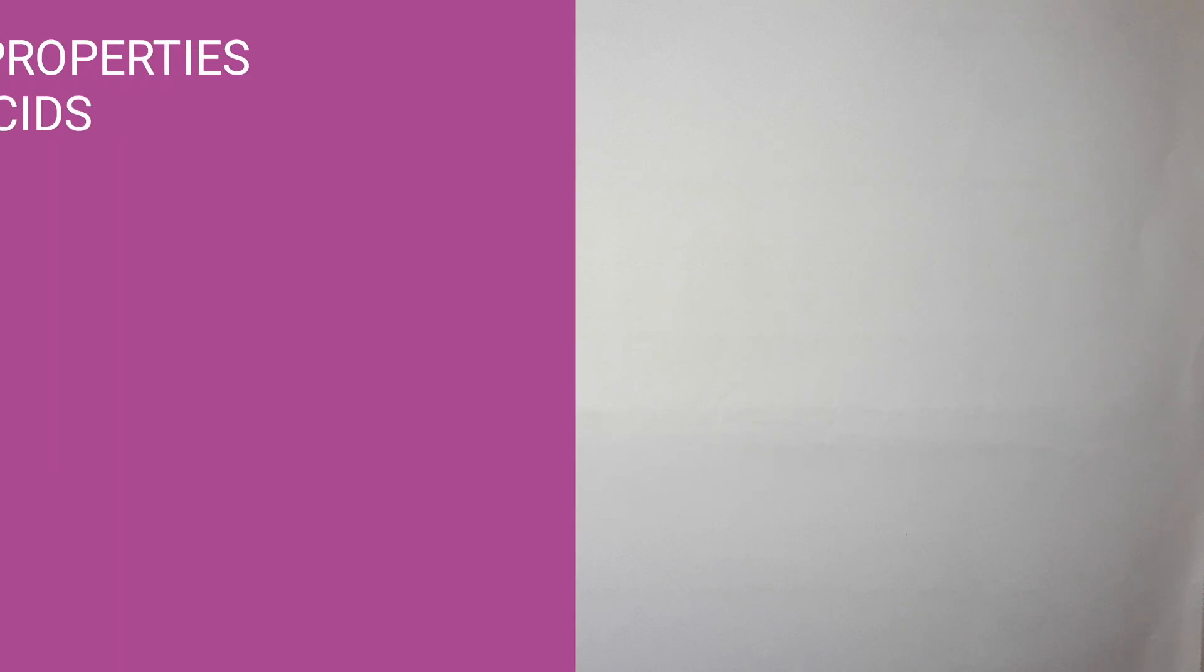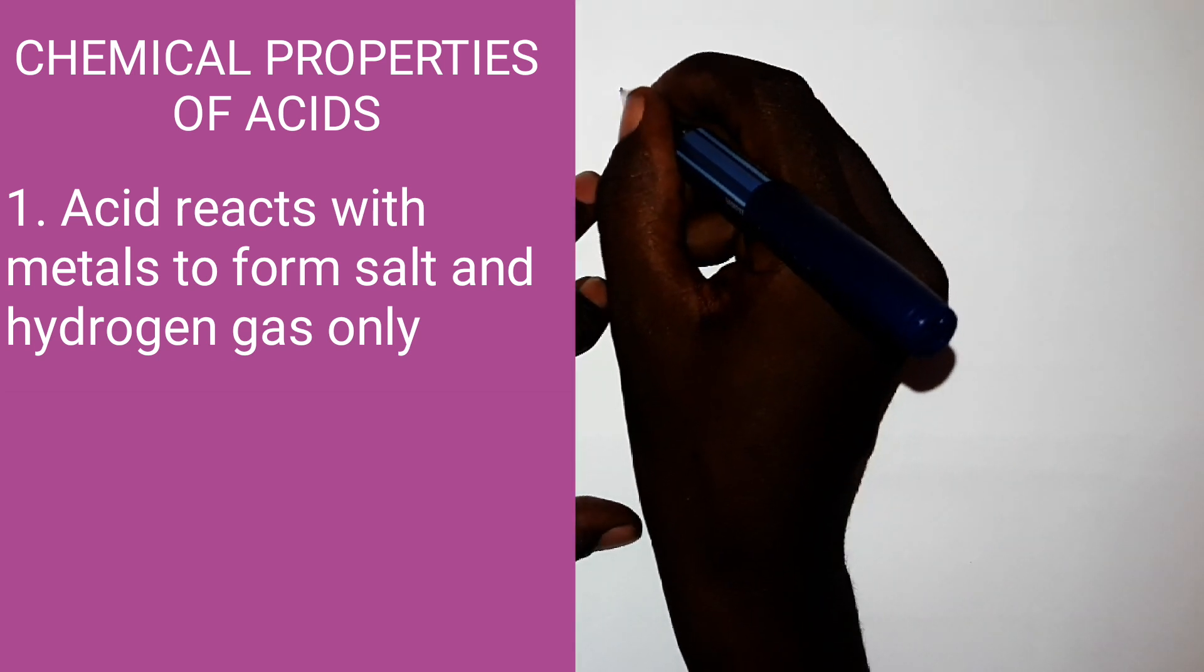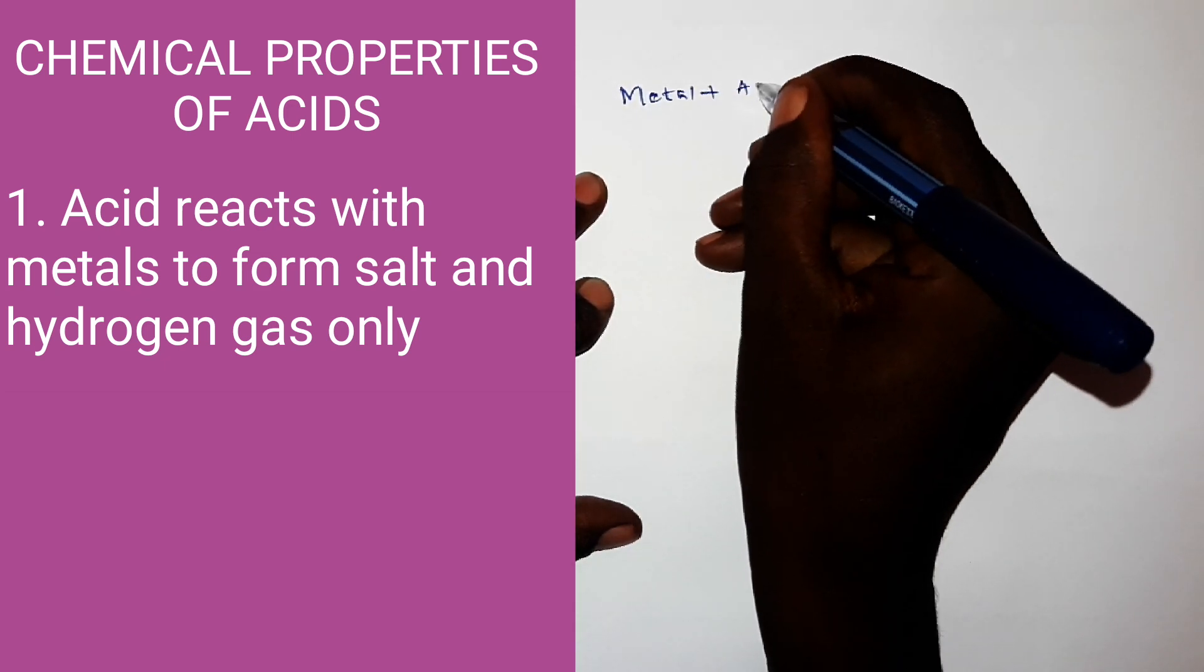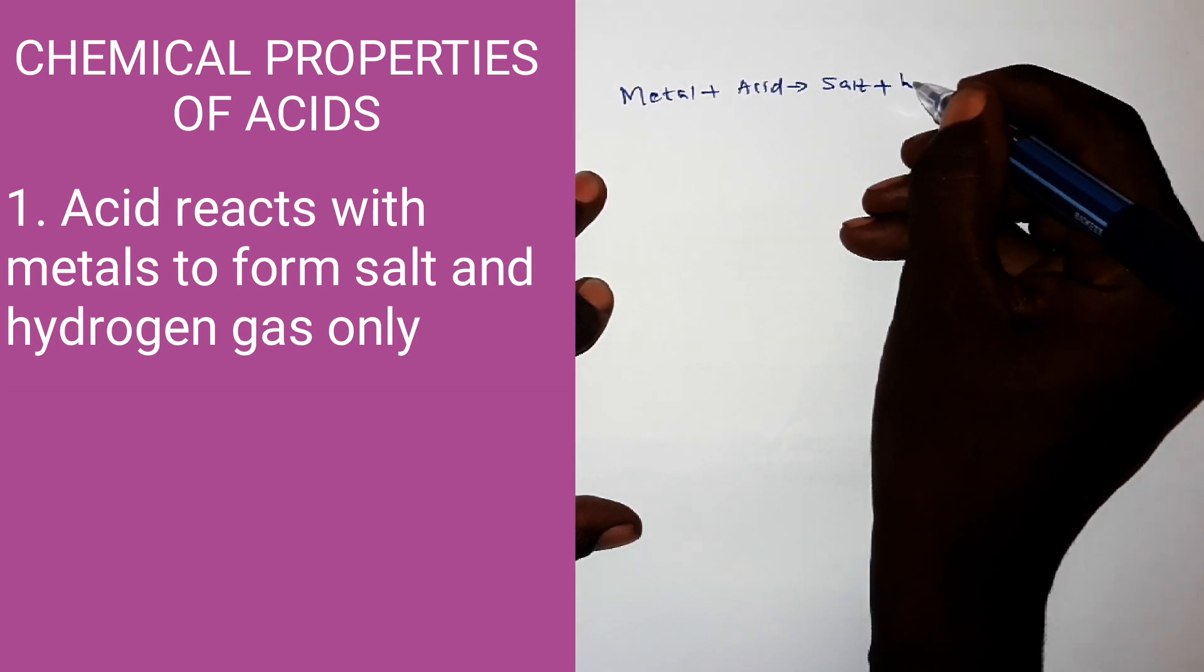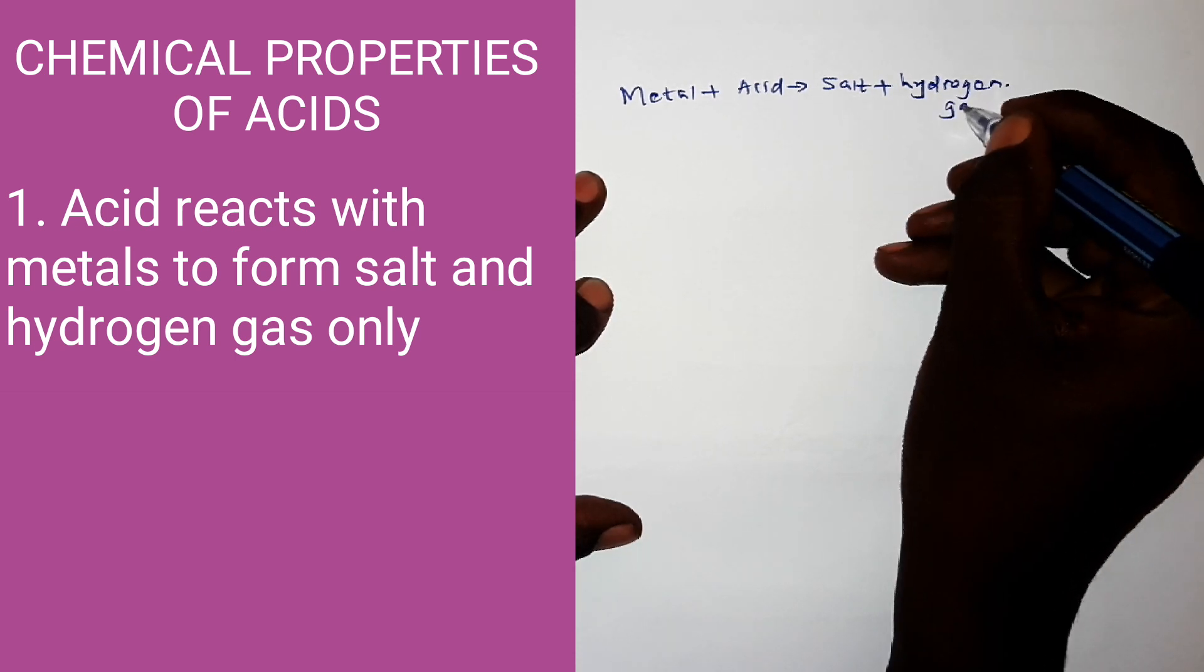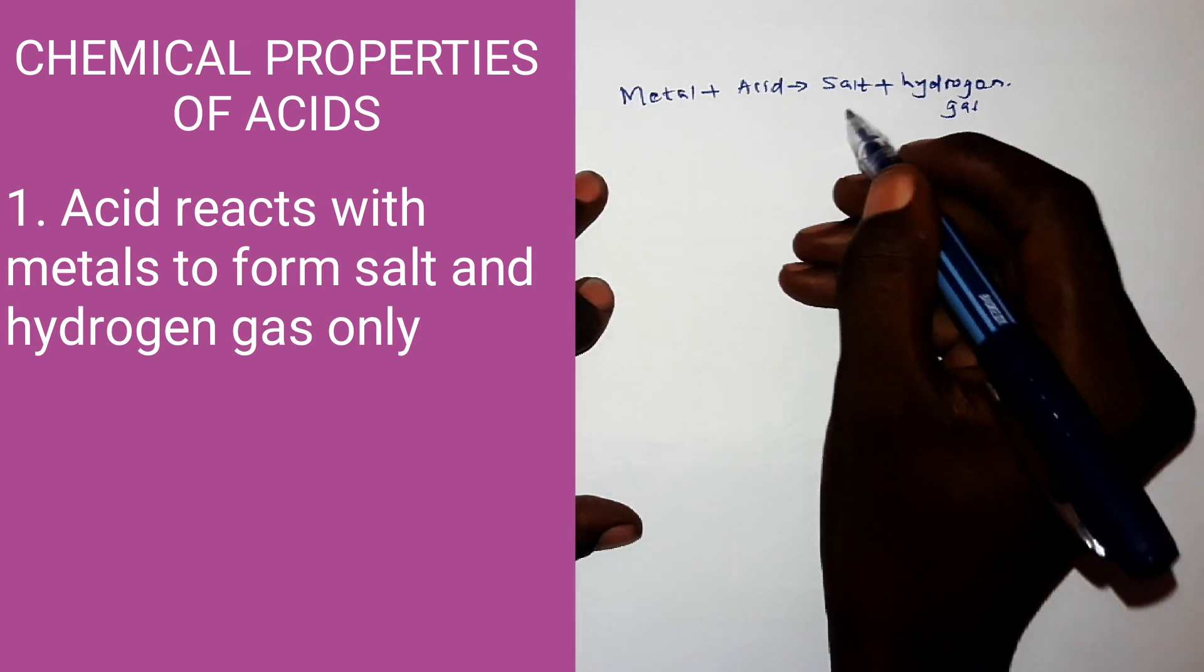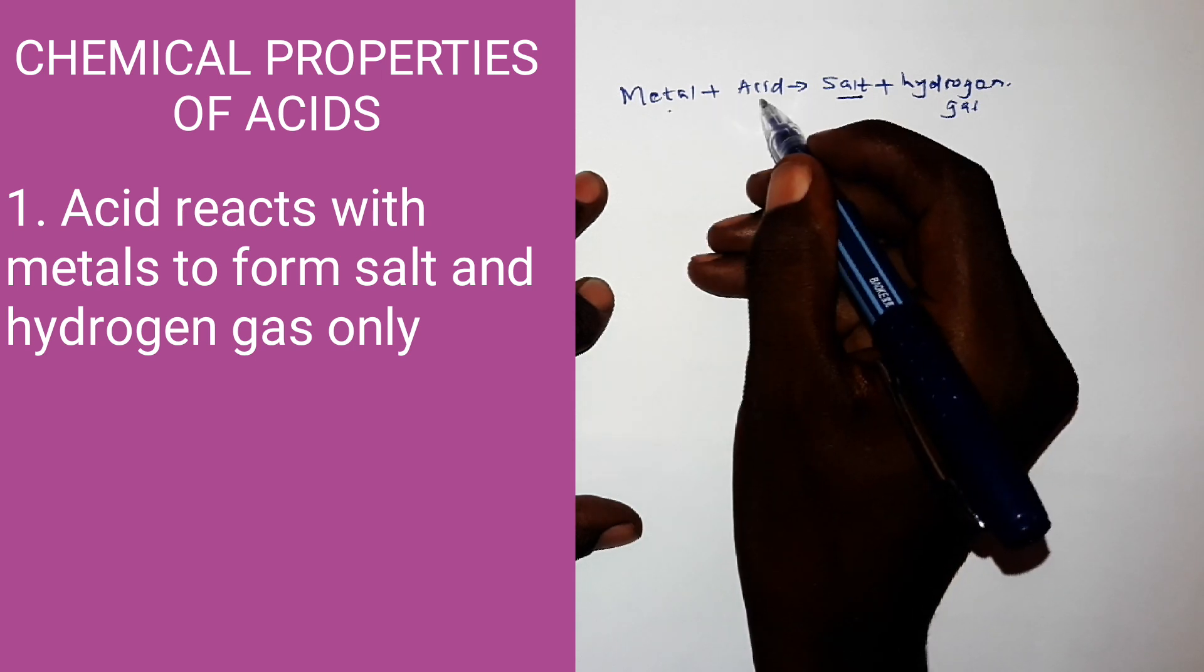Now the chemical properties of acids include they react with metals to form salt and hydrogen gas only. The word equation is metal plus acid gives you salt plus hydrogen gas. Now in this equation, the name of the salt is always derived from the name of the metal followed by acid radical.